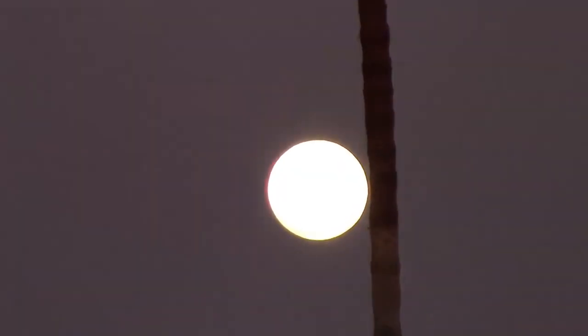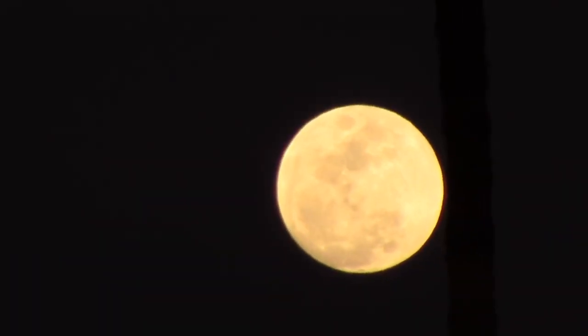But notice that the moon has a uniform brightness right up to the edge. How can this be?